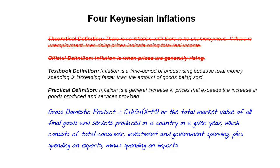GDP is meant to be a measure of the total market value of all final goods and services produced in a country in a given year. It consists of C plus I plus G plus X minus M — consumer spending, investment, and government spending, plus exports minus imports. Because it represents both the total goods and services measured in money, GDP is a reasonable way for us to address both these definitions. Furthermore, GDP is always how these measures are in fact accounted for by Keynesian economists.